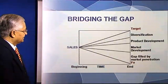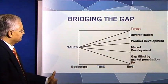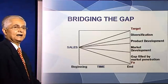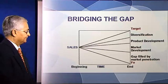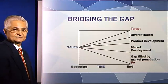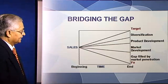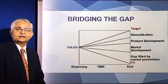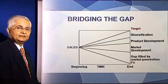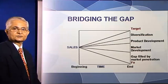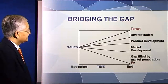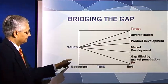Let's look at this chart. We are today at the beginning of the period, and the end of the period is at the end of one financial year. The sales of the company are shown on the sales axis. The company is continuously losing market share for a variety of reasons, and because of that, the company projects that if it goes on as it is today, the sales would be at a lower level.